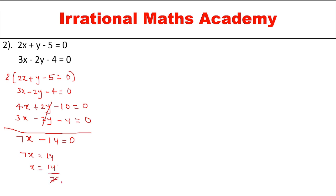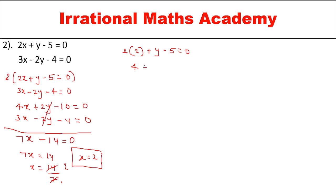So 7x equal to 14, therefore x equal to 14 divided by 7, which gives x equal to 2. Now I substitute this x value into the first equation: 2 times 2 plus y minus 5 equal to 0, giving 4 plus y minus 5 equal to 0.